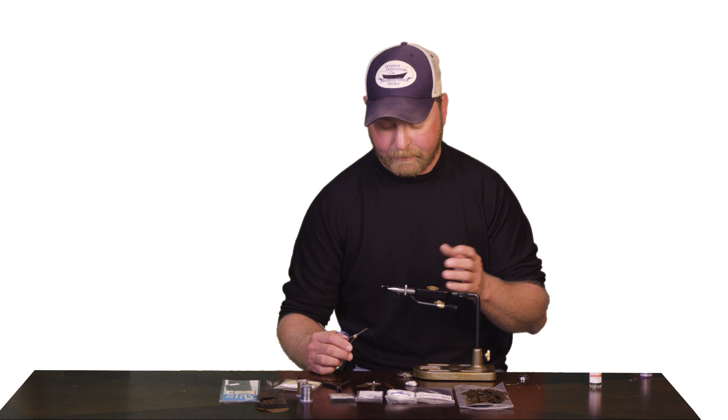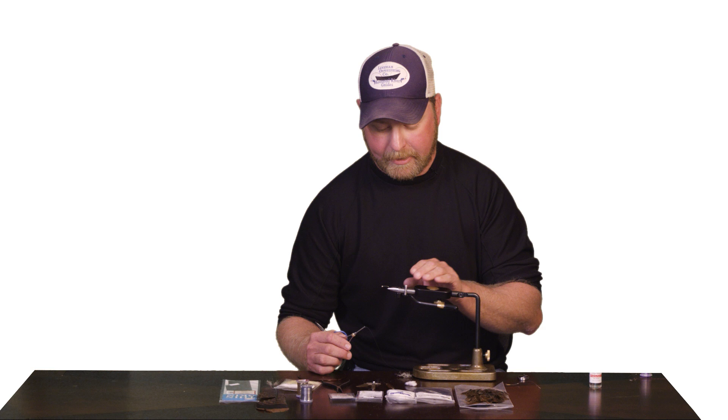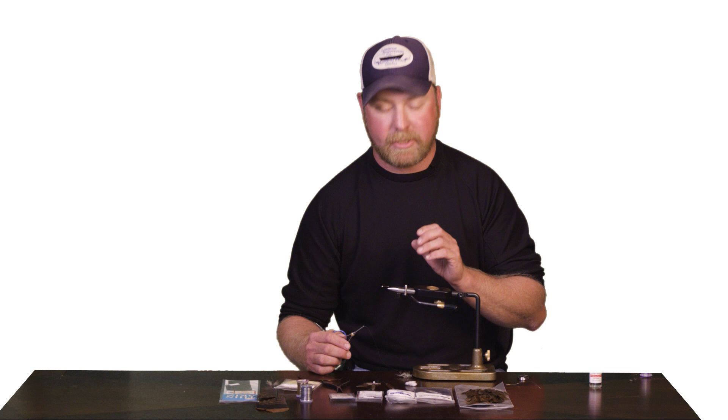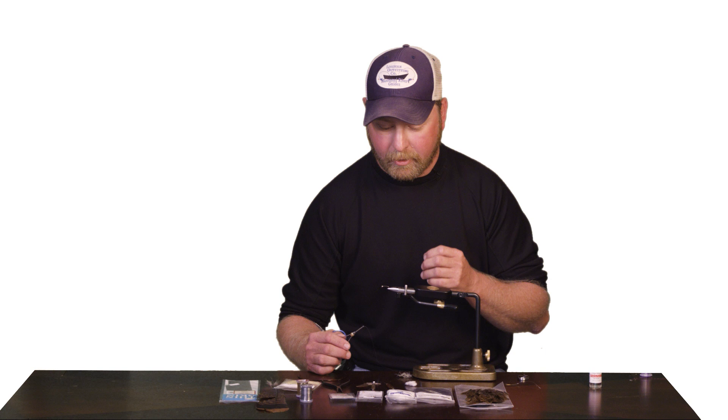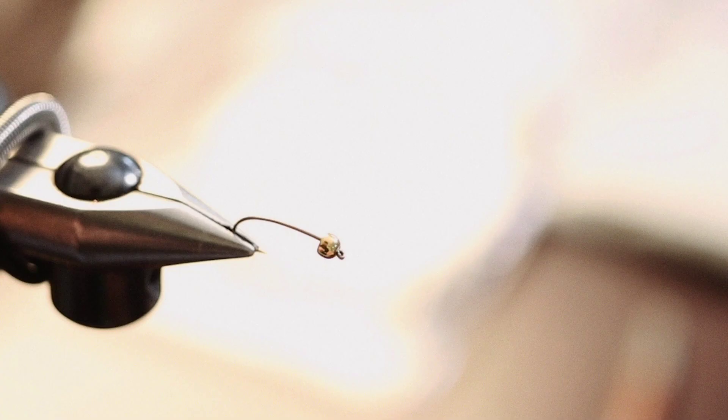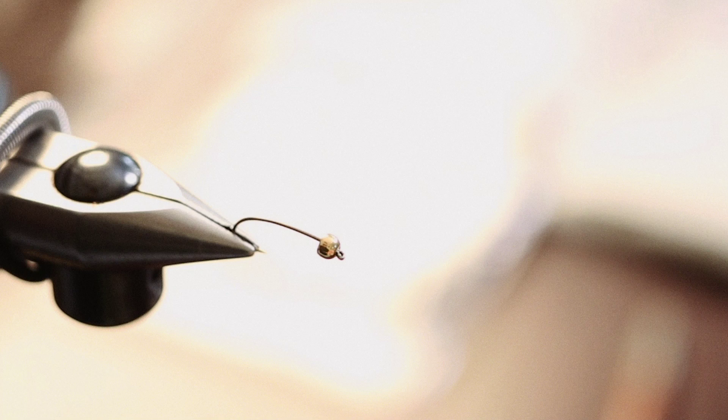We're going to start out with an Umpqua U204 hook. We want a 2x long curved stonefly hook and we're going to use a tungsten bead because we want this fly to get down quickly. We're going to use a tungsten 1/8 inch bead with this size 12 hook. We're all set up in our regal vise with our curved stonefly hook and the tungsten bead.